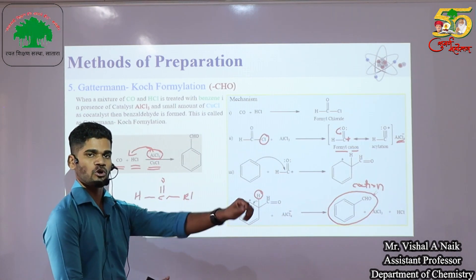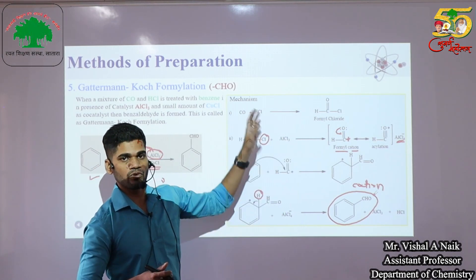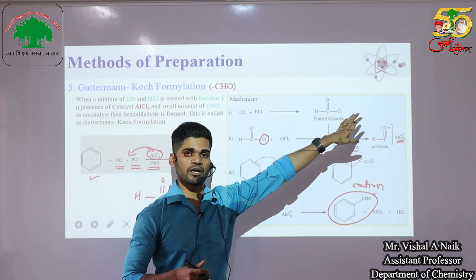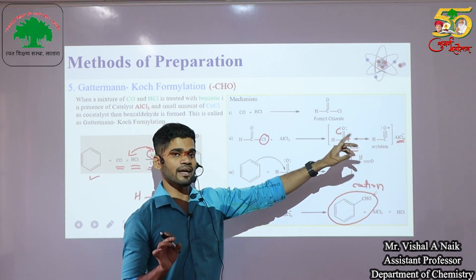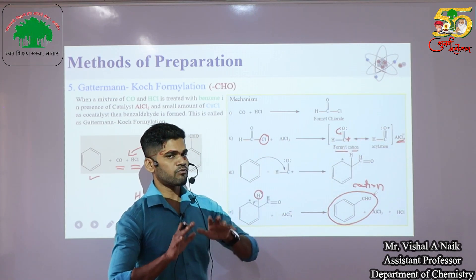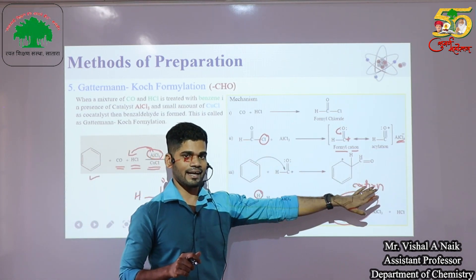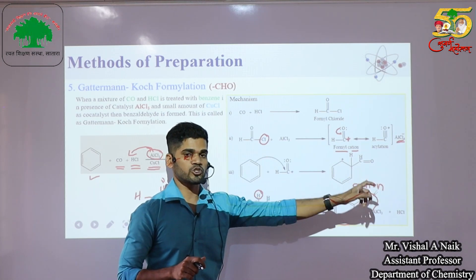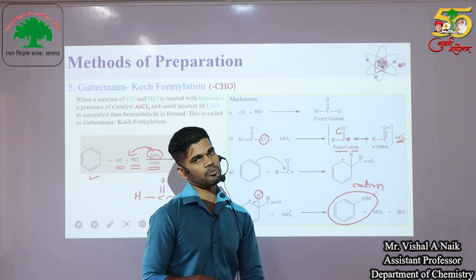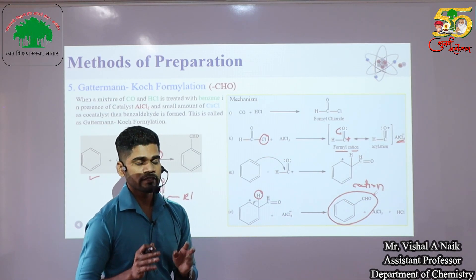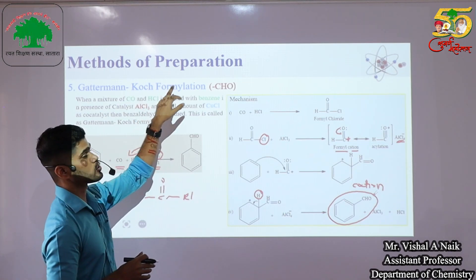The unstable aromatic cation loses a proton — the AlCl₄⁻ formed in the second step abstracts the hydrogen atom — and electrons migrate back to restore aromaticity, giving the stable aromatic aldehyde product. In summary, Gattermann-Koch is a four-step electrophilic substitution reaction where a formyl group is introduced into a benzene ring to give benzaldehyde.